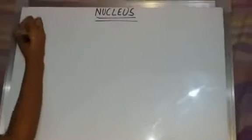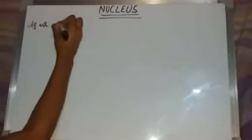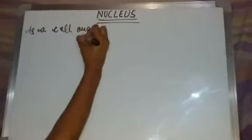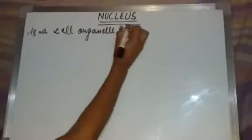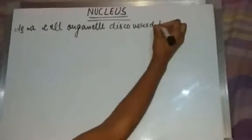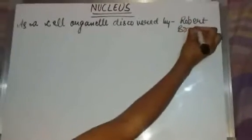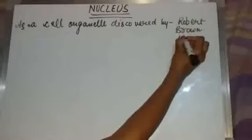Our next topic is the nucleus. The nucleus was first discovered as a cell organelle by Robert Brown in 1831.